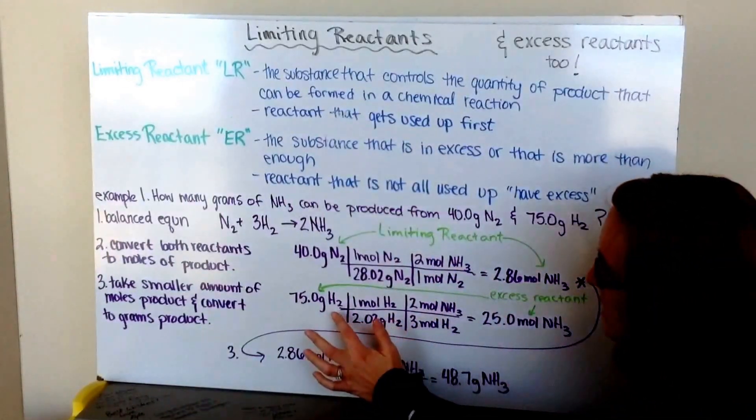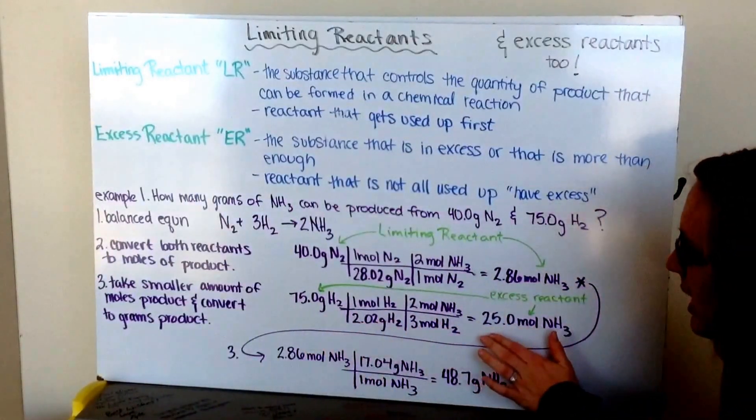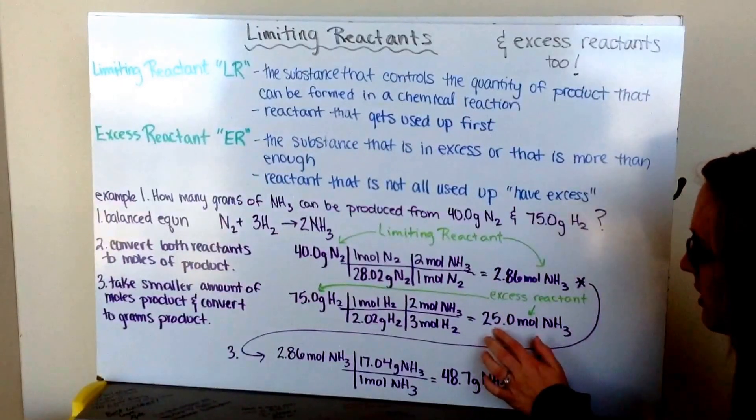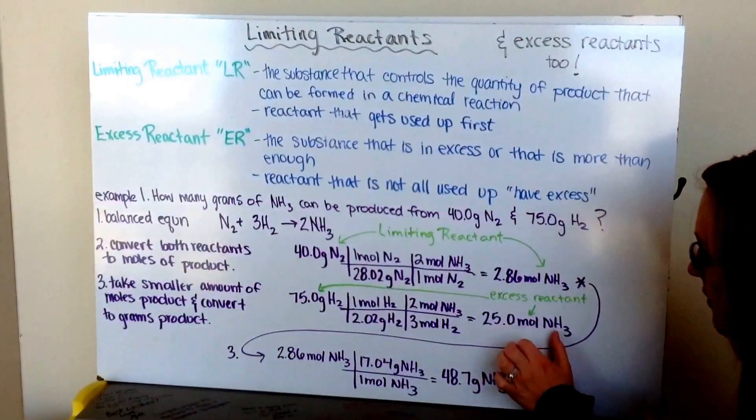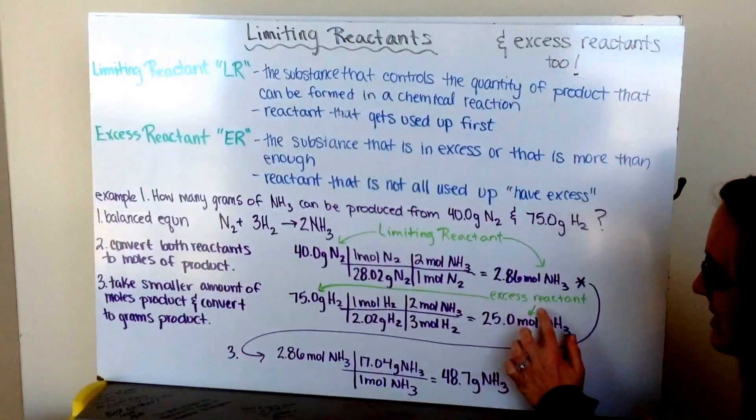Then, my hydrogen, well, I could continue on if I had enough nitrogen to keep making up to 25 moles of ammonia. So, this becomes my excess reactant.